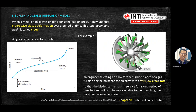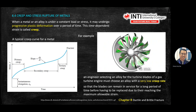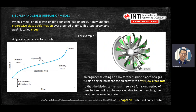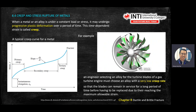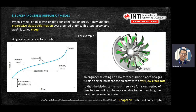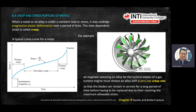For fatigue, the graph plots da/dn versus delta K — that is the crack growth rate versus the stress intensity factor range. For creep, the graph is strain versus time.